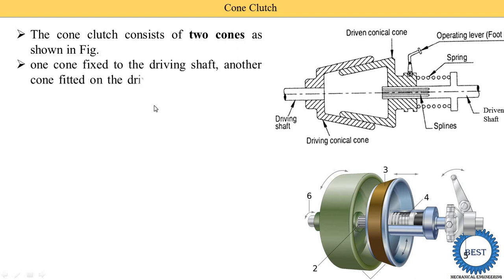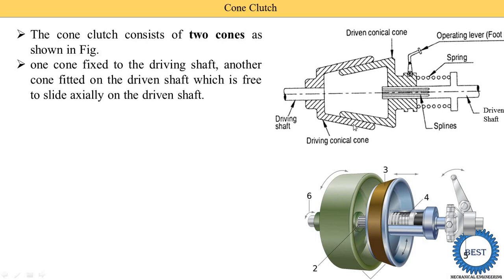One cone is fixed to the driving shaft. Here you see this cone is fixed on the driving shaft and another cone is fitted on the driven shaft, which is free to slide axially on the driven shaft. This is the second cone and its name is the driven cone. This driven cone slides axially — in the x direction — on the driven shaft. On the driven shaft, a spline is provided, which is a rectangular slot on which the driven cone slides, meaning it can move in and out.